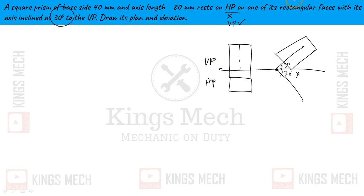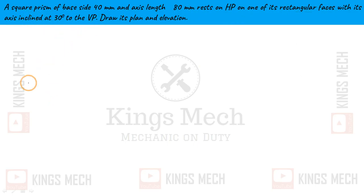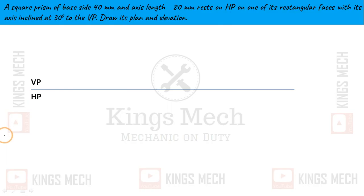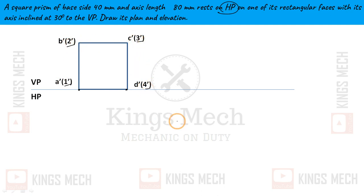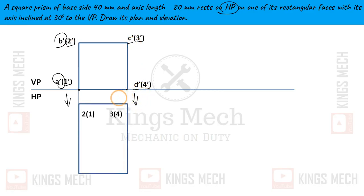First, draw the VP-HP line. The base axis rests on HP, meaning the axis line is resting. So it is resting on the axis line. Label the base corners A, B, C, D on one side. On the other side, label points 1, 2, 3, 4. Project these points down — the bottom points are dashed. Lines C and D connect to their common points.